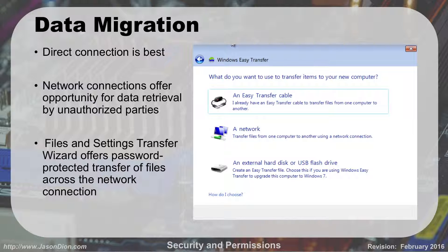Data migration: when doing data migration we talked about Windows Easy Transfer or the User State Migration Tool. Using a direct connection is best — a cable between the two computers is fastest and also the most secure. If you do it over a network connection, there is a possibility that somebody on your network can capture the data you're sending. The old XP file and settings transfer wizard did offer a password-protected transfer over the network, but if it's just using a password without strong encryption, it may be cracked. So using a direct connection like the easy transfer cable works quickest and most securely.